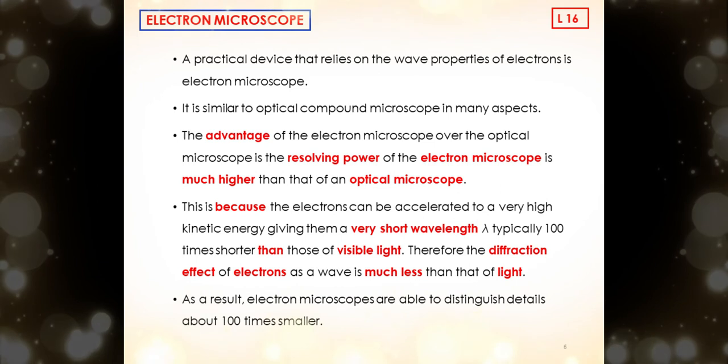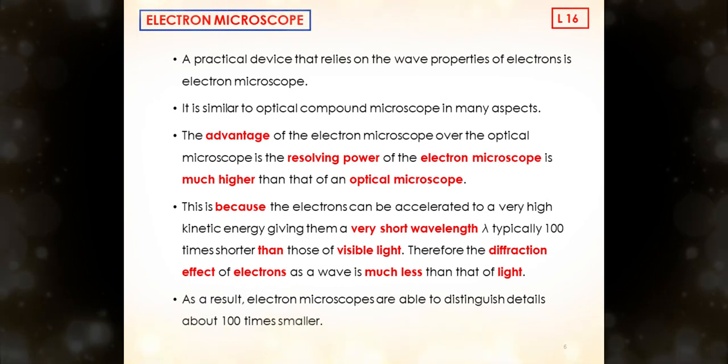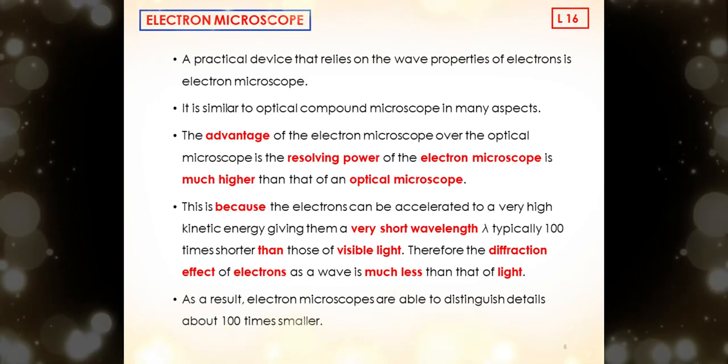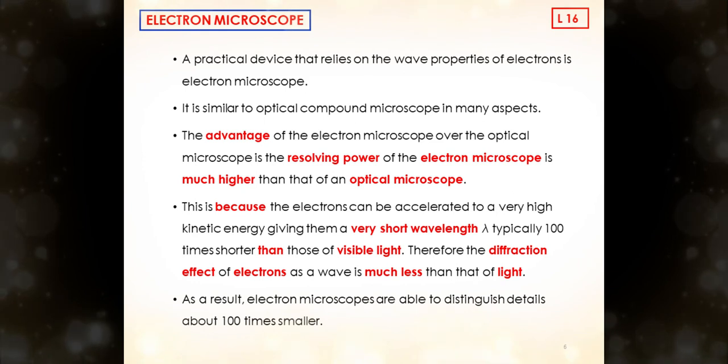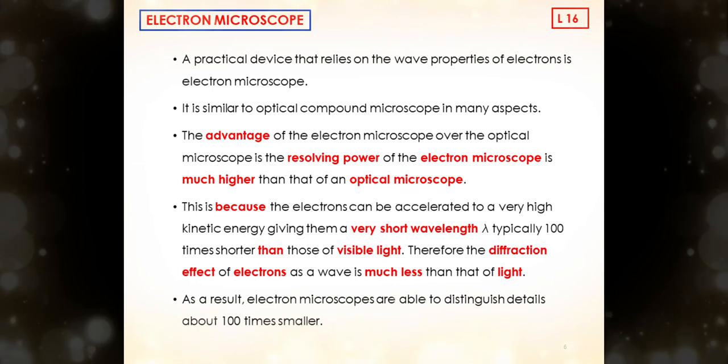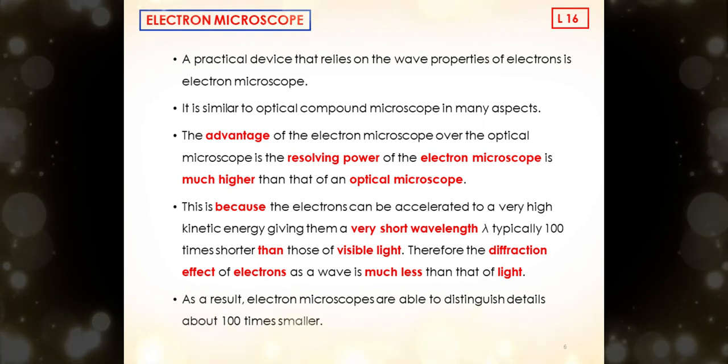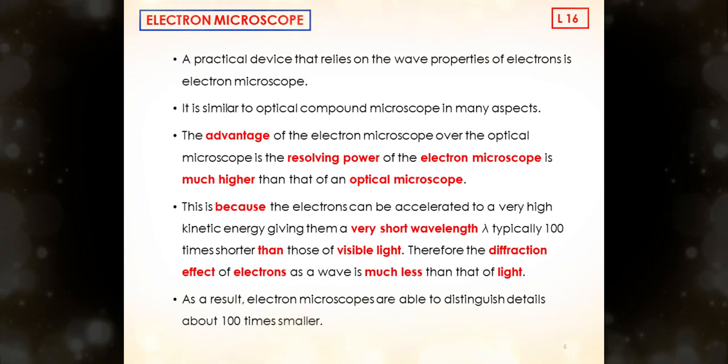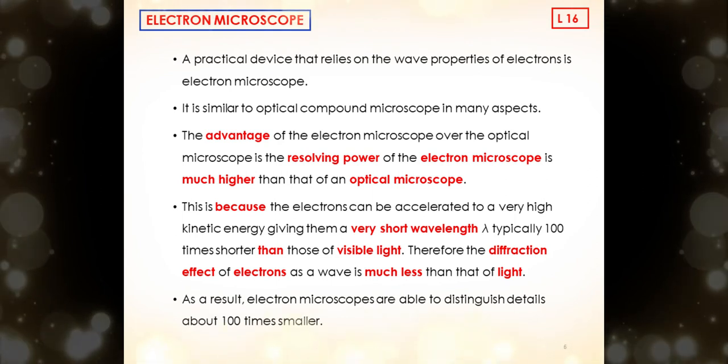This is because the electrons can be accelerated to a very high kinetic energy, giving them a very short wavelength lambda, typically 100 times shorter than those of visible light. Therefore, the diffraction effect of electrons as a wave is much less than that of light. As a result, electron microscopes are able to distinguish details about 100 times smaller.